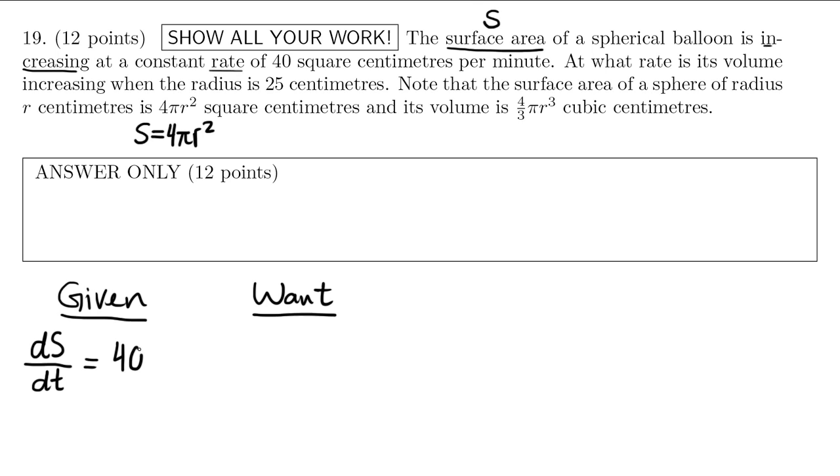Since it's increasing it's positive 40. If it would have said decreasing at a rate of 40 we would have had to put a negative 40 here. So we've kind of encoded that first sentence into a mathematical statement.